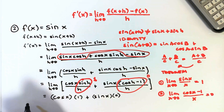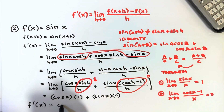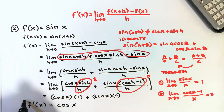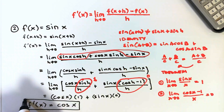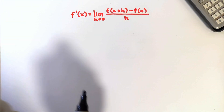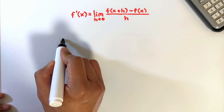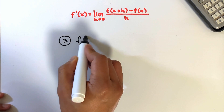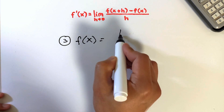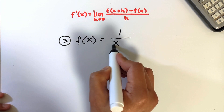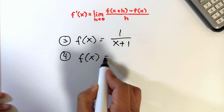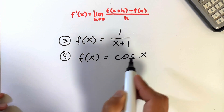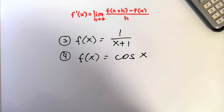Thus, the final answer — the derivative of sin x — is equal to cosine x. You may try finding the derivative of f of x equals 1 over x plus 1, and f of x equals cosine x, and share your work in the comments. Thank you.